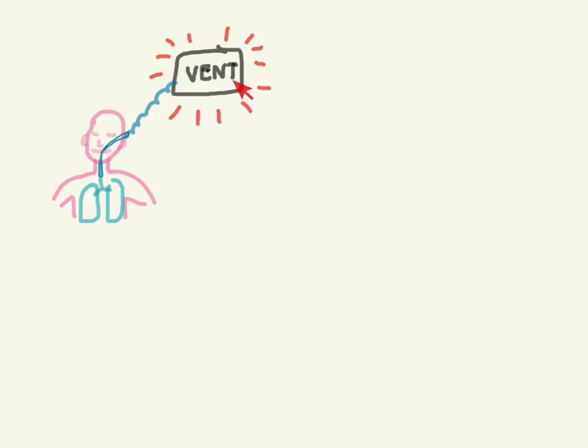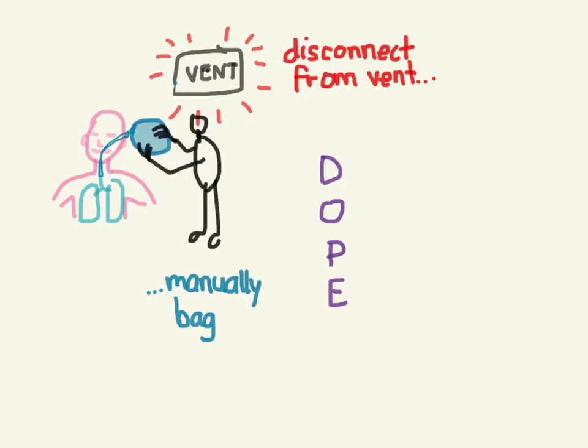The final thing is what happens when the ventilator starts alarming when they're intubated. The mnemonic is DOPE, D-O-P-E. The first thing when the ventilator alarms or pulse ox drops is disconnect them from the vent and manually bag the patient. You'll find out what it's like to manually bag them.